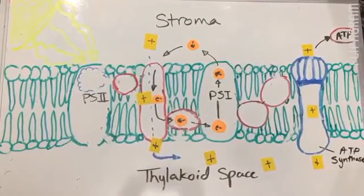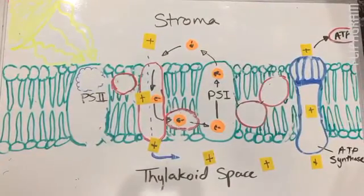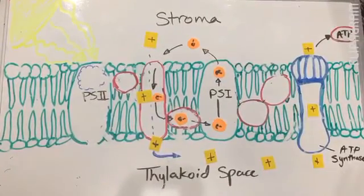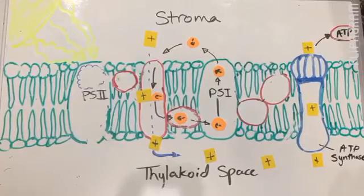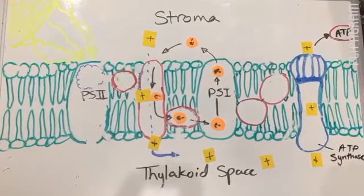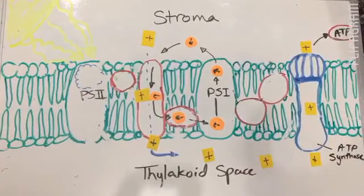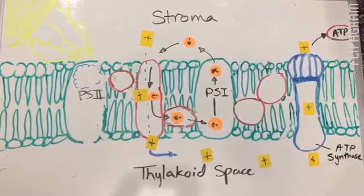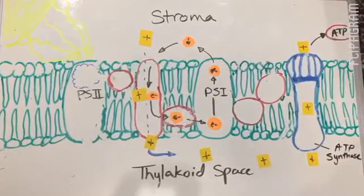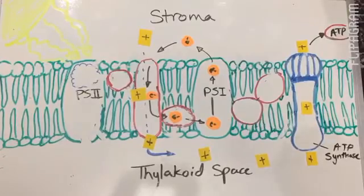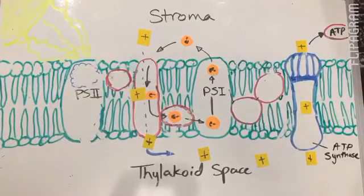Electrons are then cycled through the proton pump and back into Photosystem I, creating energy which allows protons to cross through the gradient and back into ATP synthase, where they form more ATP.